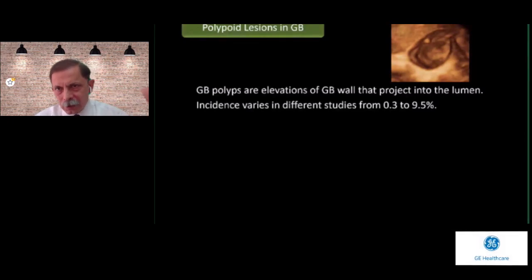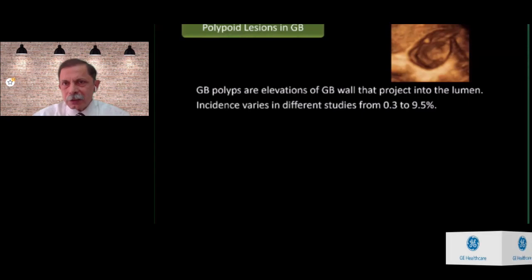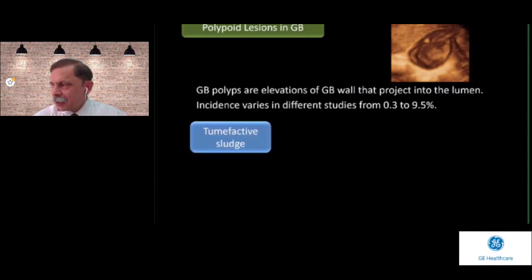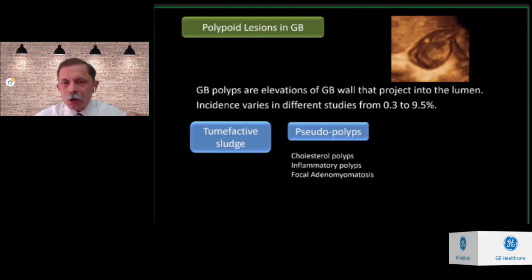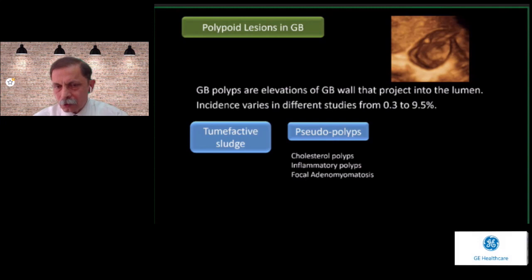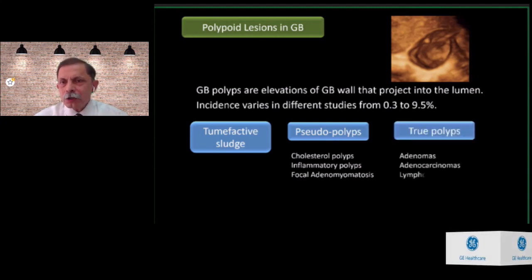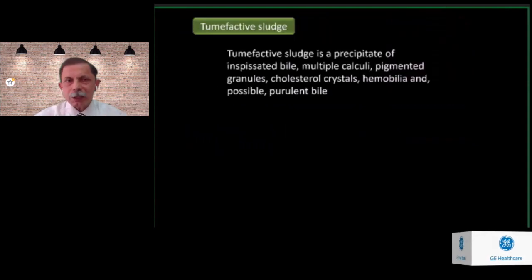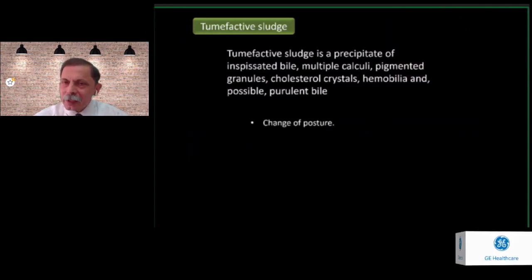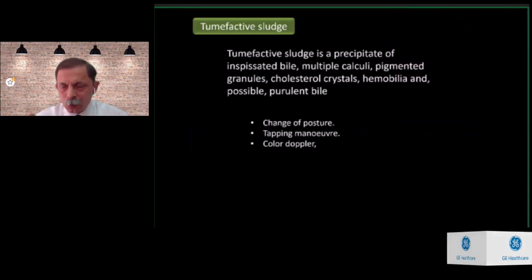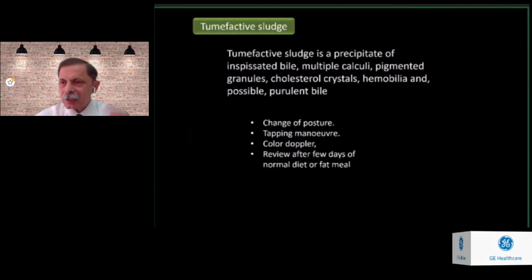Polypoid lesions in the gallbladder are not very common — the incidence varies from 0.3% to over 9.5% in different studies. They are elevations of the gallbladder wall projecting into the lumen. Three types: tumefactive sludge (sludge balls looking like polyps), pseudopolyps from cholesterol deposition or inflammatory polyps or focal adenomyomatosis, and true polyps including adenomas, adenocarcinomas, lymphomas, and metastases. Tumefactive sludge is not attached to the gallbladder wall, so if you ask the patient to change posture or tap on the gallbladder, the sludge ball will move. Color Doppler shows no vascularity in sludge.